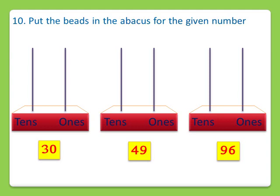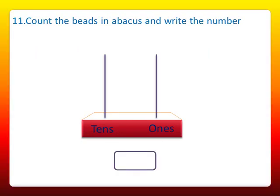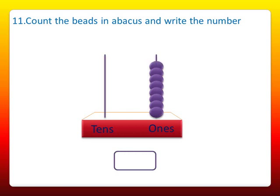Question number 11. Here we have to count the beads in the abacus and write the number. There are some beads in the one's abacus stick: 1, 2, 3, 4, 5, 6, 7, 8. So 8 ones. And there are two beads in the ten's abacus stick: 1 and 2. So 2 ten's and 8 ones makes 28. The answer is 28.